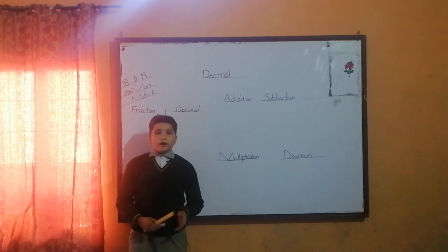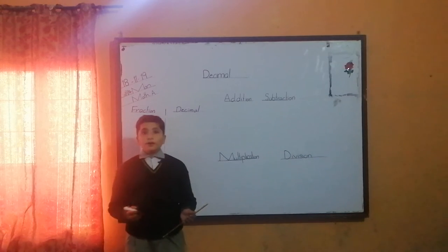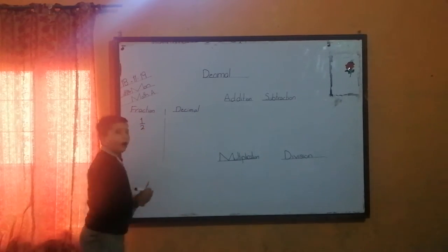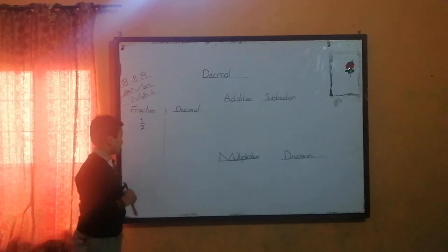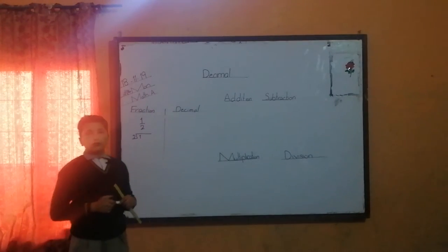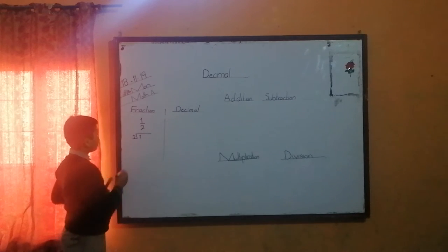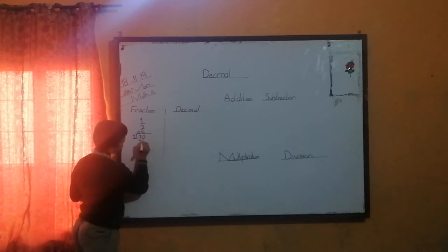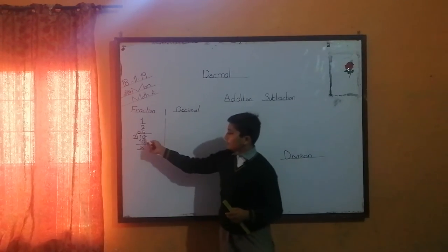Assalamu alaikum, my name is Sain. I will tell you about decimals. What is a decimal? A decimal is a part of a whole number. How can we convert a fraction into a decimal? I write the fraction 1 by 2. Since 1 is smaller than 2, we use the help of a decimal point to make 1 into 10. 10 divided by 2 is 5, so 0.5 is the decimal.